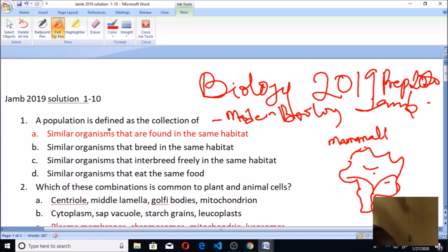If you check through the options, you're going to see: similar organisms found in the same habitat, similar organisms that bred in the same, similar organisms that interbreed, similar organisms that eat the same thing. So you look at the verbs: eat, population is not about eating similar things, not by interbreeding. Interbreeding simply means having intercourse and giving birth to younger ones. Breeding also means having intercourse within the same types of organism. But found, that's actually the answer to this, so A is the answer to this.